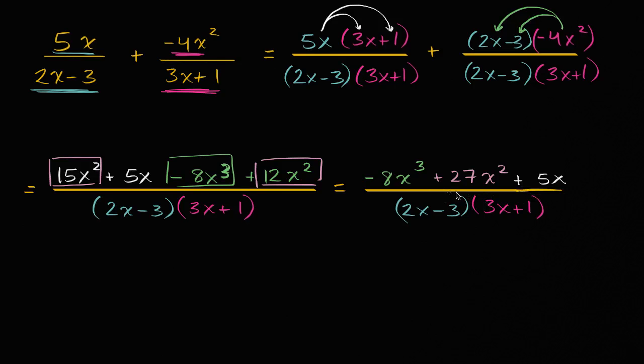It doesn't seem like there's any easy way to simplify this further. You could factor out an x out of the numerator, but that's not going to cancel out with anything in the denominator. And it looks like we are all done.